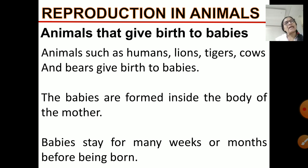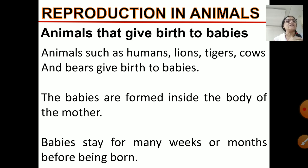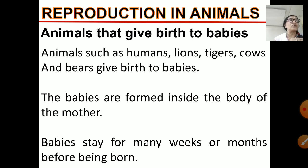Animals like lion, tiger, dog, cat, and even humans reproduce by giving birth to their young ones. The baby is formed inside the body of the mother and comes out after staying there for some weeks or sometimes months — this period is different for different animals. When the baby is born, it is very small and cannot do any work on its own, so the mother has to take care of it. Similarly, animals also take care of their young ones and feed them with their milk.